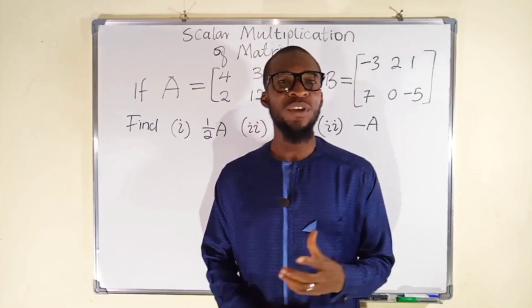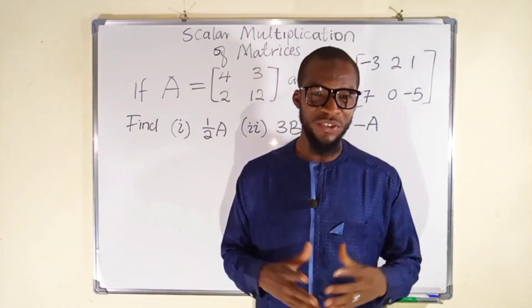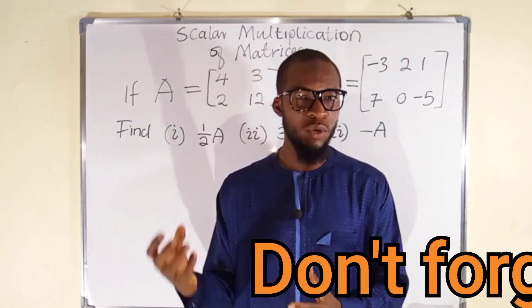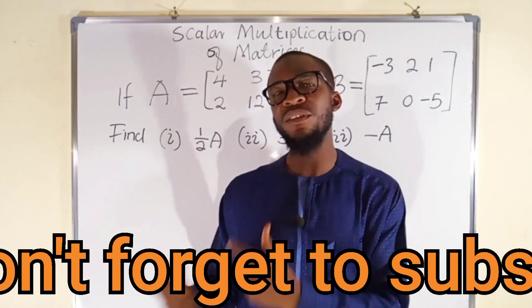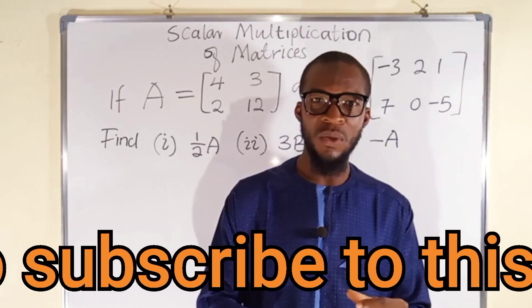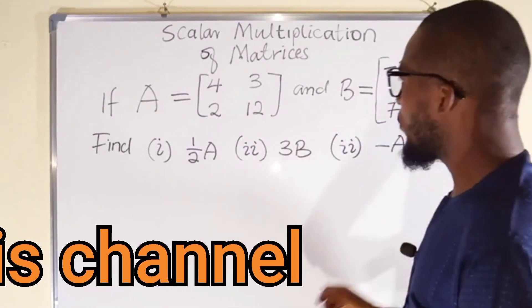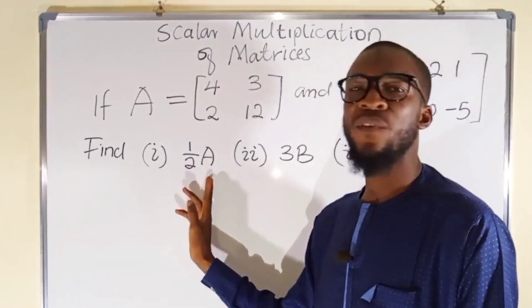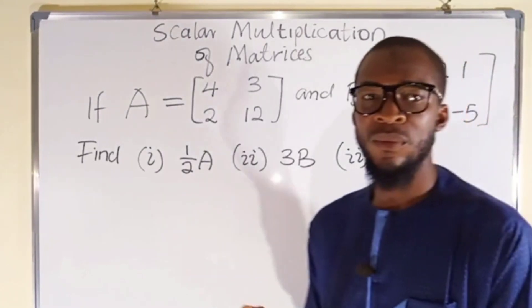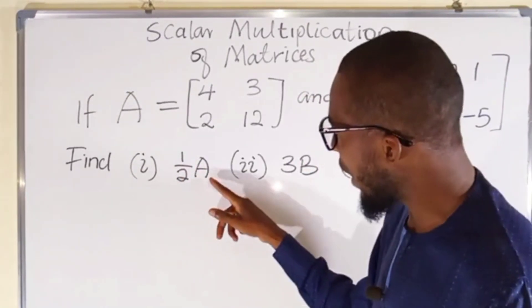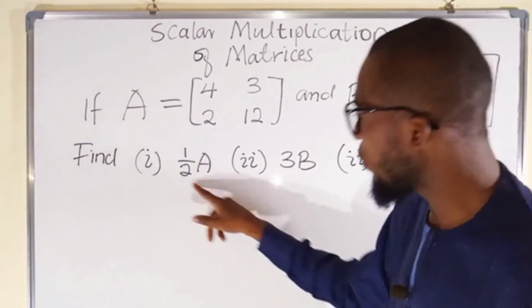Hello, good morning viewers. Today's tutorial is about scalar multiplication of matrices. Scalar multiplication of any matrix is just the product of a real number and a matrix, where that real number is used to multiply every single entry in that matrix, or every single element in the matrix. I have some questions here — you can see three of them — where we are given matrix A and matrix B, and we are asked to simplify half of A, 3B, and negative A. We're going to use a scalar 1 over 2 to multiply every entry or every element in matrix A. So let's begin with the first one.